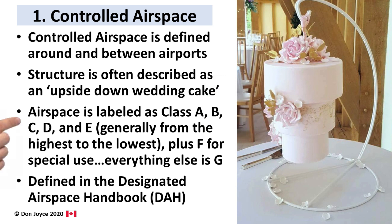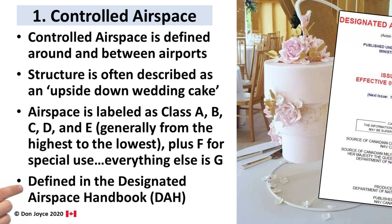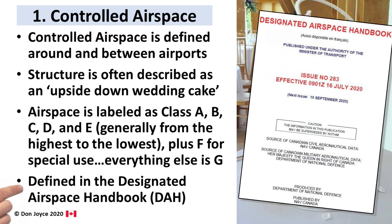Airspace is labeled as class A, B, C, D, and E, generally from the highest to the lowest, plus there's a class F airspace in Canada. Everything else — in other words uncontrolled airspace — is called class G. The precise locations, dimensions, and altitudes of all of this wedding cake is defined in a NAV Canada document called the Designated Airspace Handbook, or DAH.